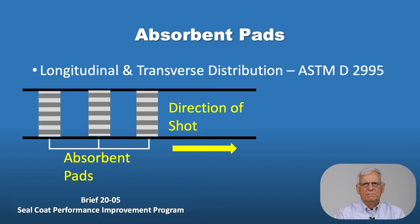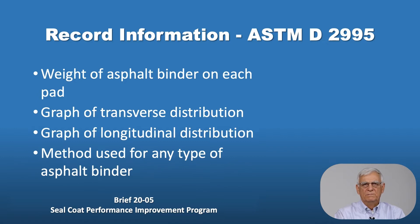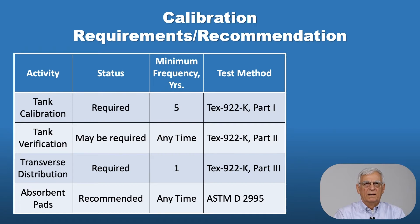Absorbent pads per ASTM D2995 are used by a few districts to determine both transverse and longitudinal distribution rates. Pads are placed on the pavement, and a graph of the distribution transversely and longitudinally is prepared. This can be used with any type of asphalt binder, though it's easier to run with asphalt cements than hot-applied binders compared to cutbacks and emulsions. In summary: tank calibrations are required every five years (Part 1), tank verifications can be done at any time as directed by the engineer (Part 2), transverse distribution is measured once a year (Part 3), and absorbent pads are recommended to determine both longitudinal and transverse variability.